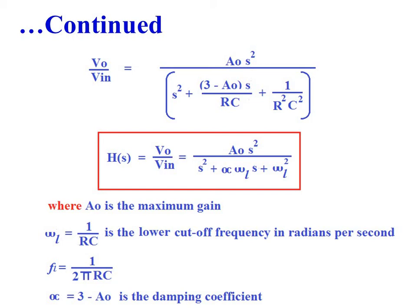So we can write the transfer function H(S) = V0(S)/VIN(S) = A0·S² / [S² + σ·ωL·S + ωL²], where A0 is the maximum gain, ωL = 1/(RC) is the lower cutoff frequency in radians per second, FL = 1/(2πRC), and σ = 3 − A0 is the damping coefficient.